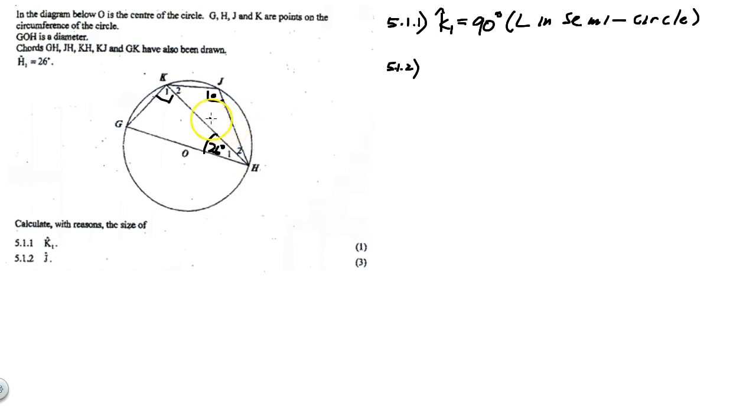Now if you look carefully, we can find G using sum of angles of triangle, and J will be opposite this angle. And what do we know about a cyclic quadrilateral? Opposite angles are supplementary. So there we go. That is our solution.